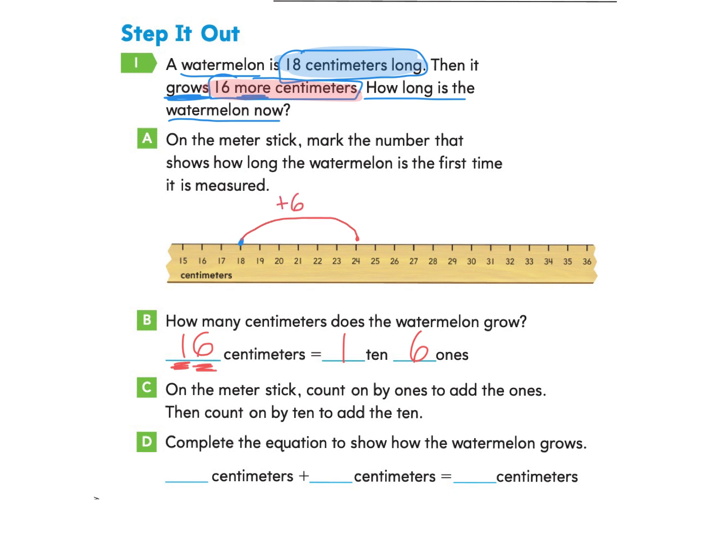And now we need to count on by 10 to add the one 10. So we're going to count on 10 and we get to the number 34 by adding 10. Now we can complete the equation to show how the watermelon grows.